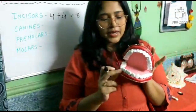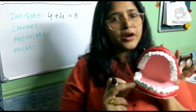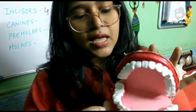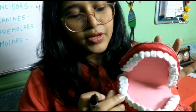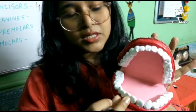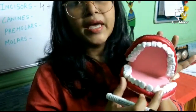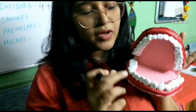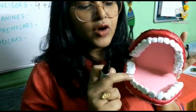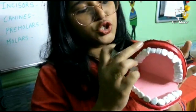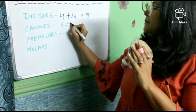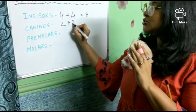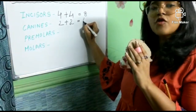Next are canines. On either sides of the incisors, we have canines. In the lower jaw we have two, and in the upper jaw we have two. So total we have two plus two, which makes four canines.